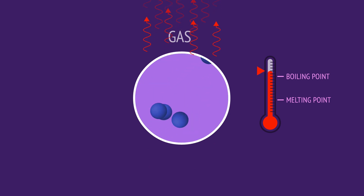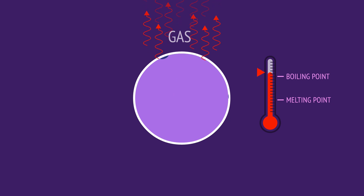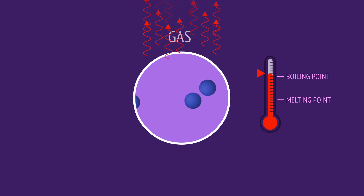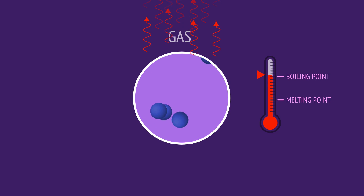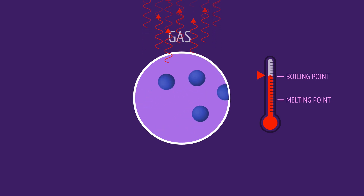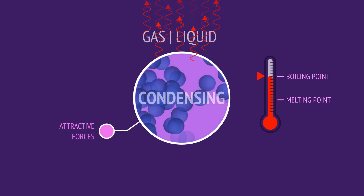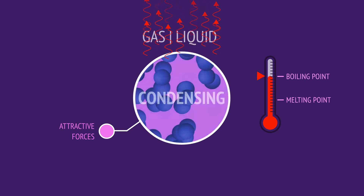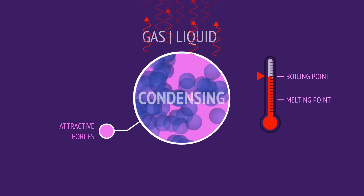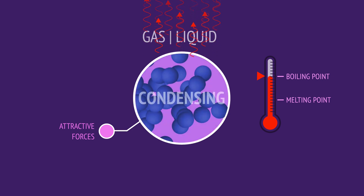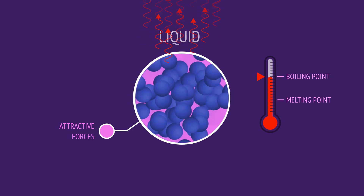However, when a gas cools, heat is released and the particles slow down, losing kinetic energy and so reducing the temperature. As the temperature falls to the boiling point, the attractive forces pull the particles together, condensing the gas to a liquid.